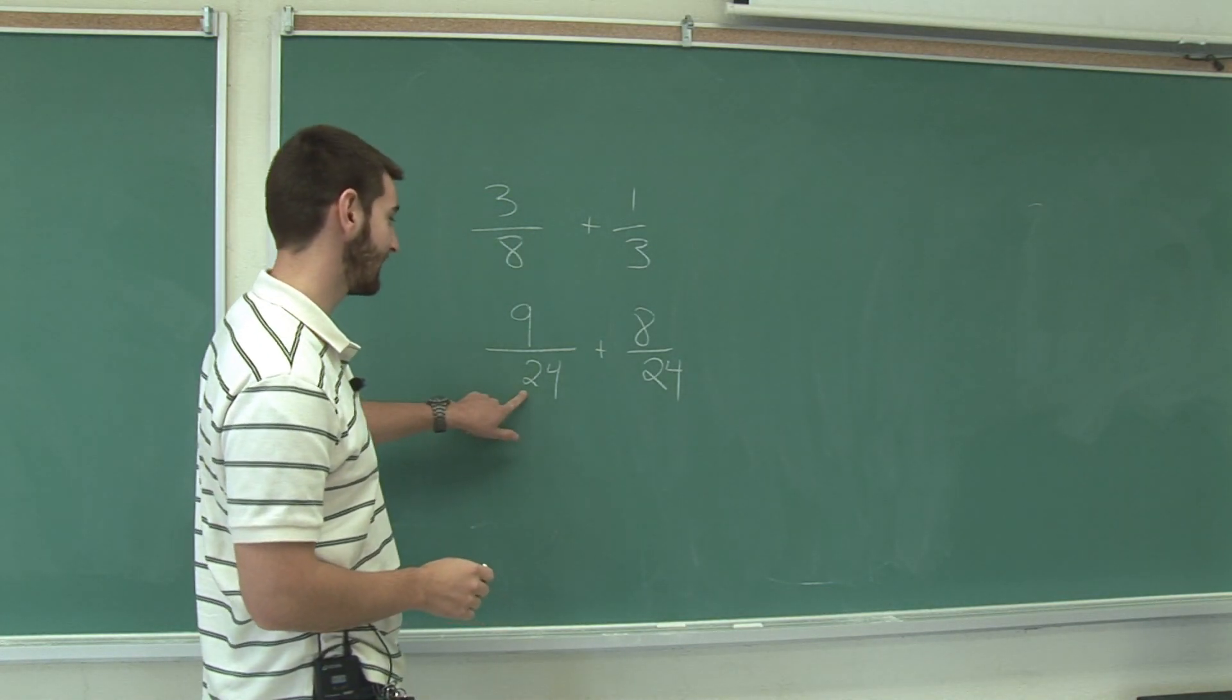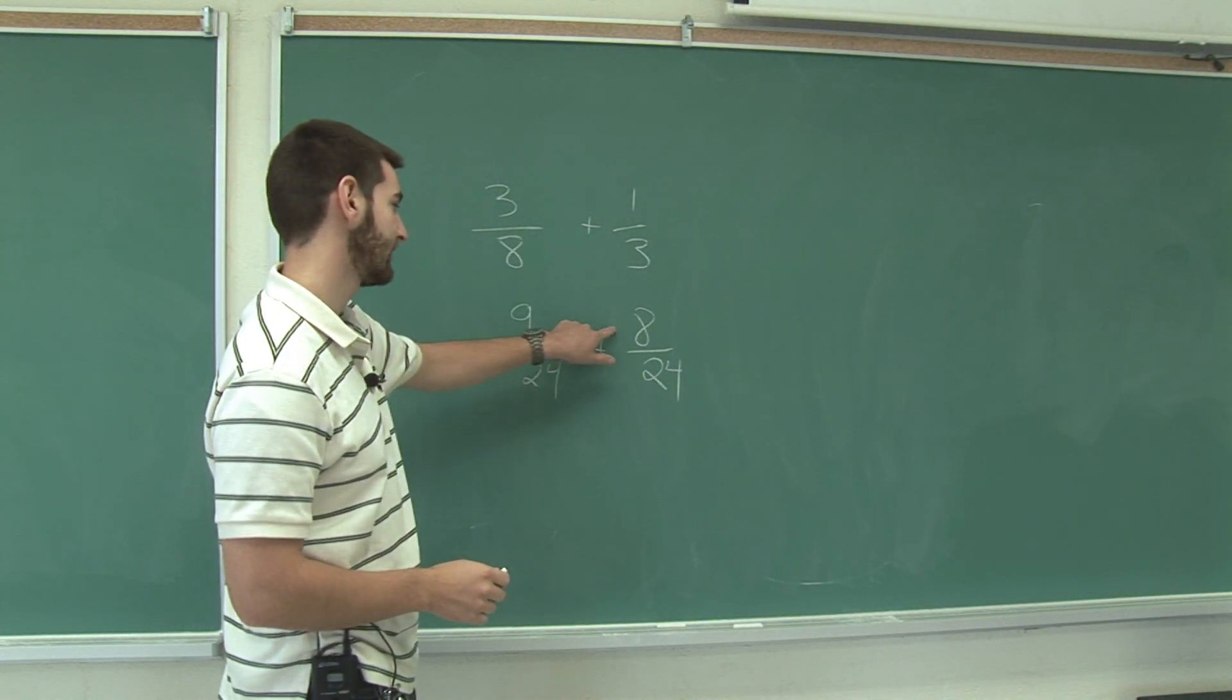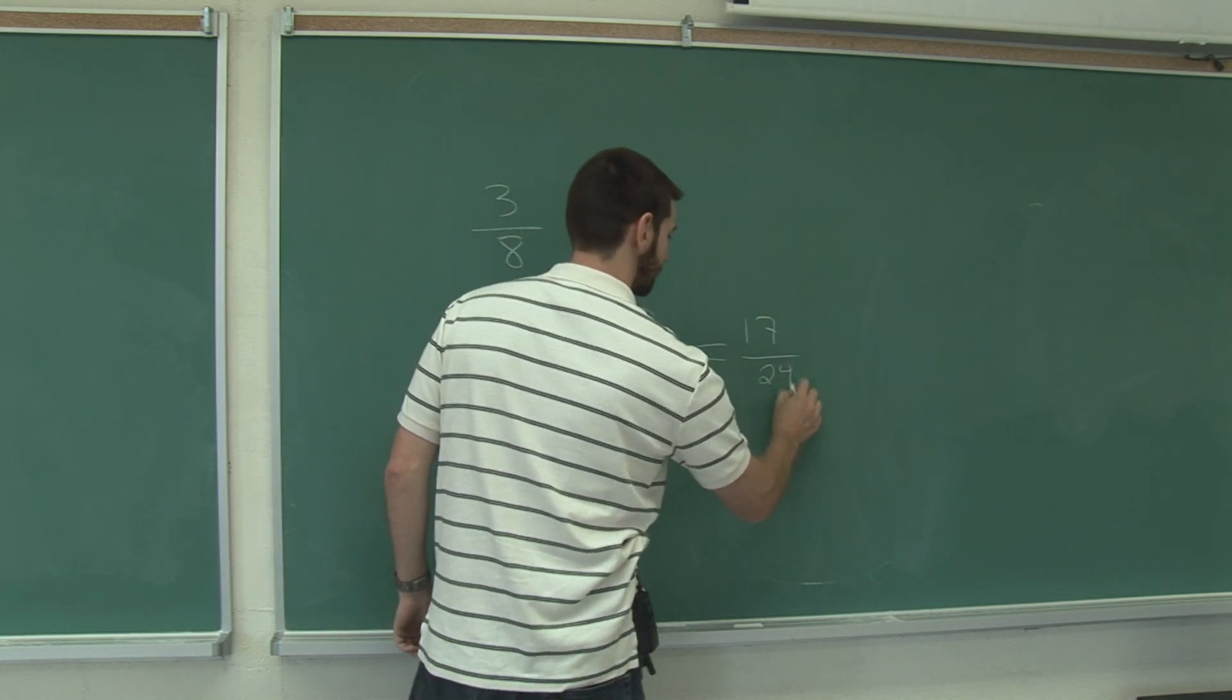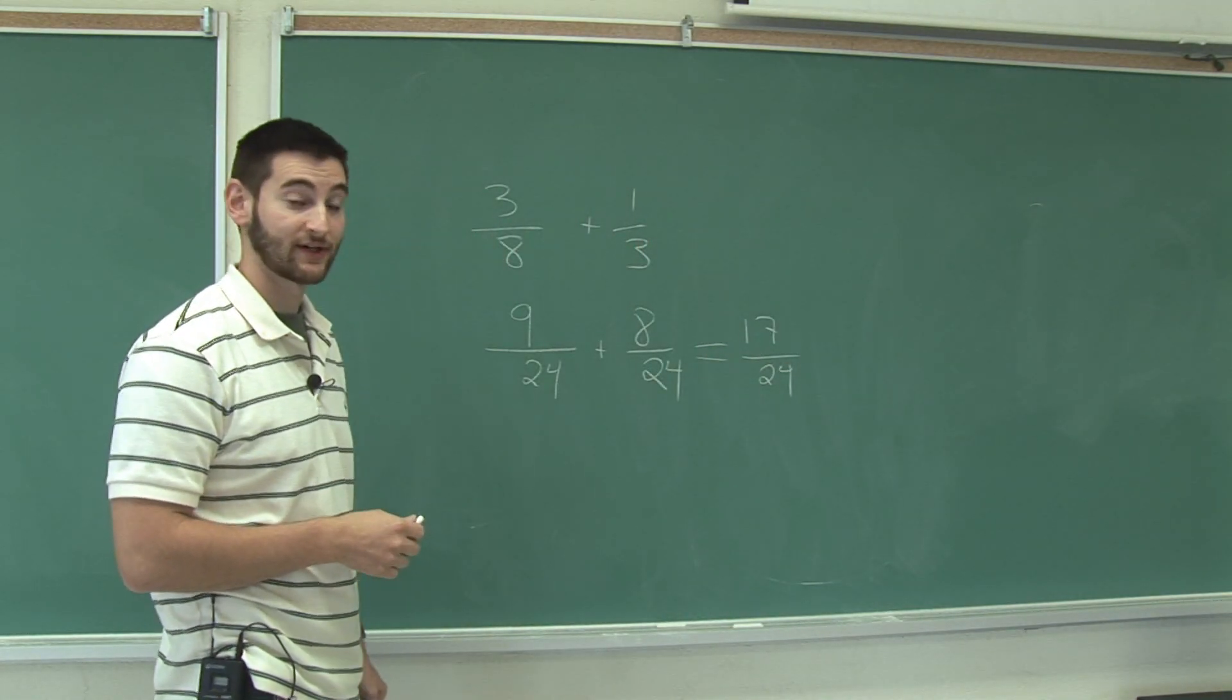So now that we have common denominators, we just add the numerators. That's how you add fractions with different denominators.